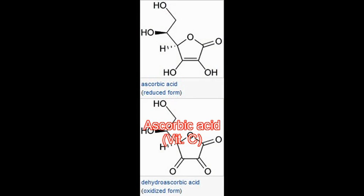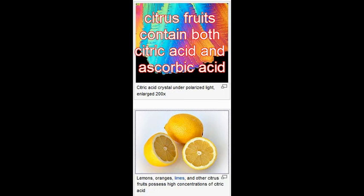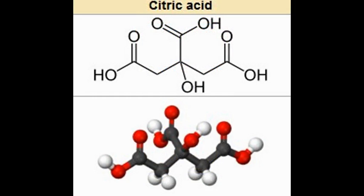Citric acid, found in citrus fruits like lemons and oranges, is a natural preservative that adds an acidic or sour taste to foods and soft drinks. It is also used as a water softener.